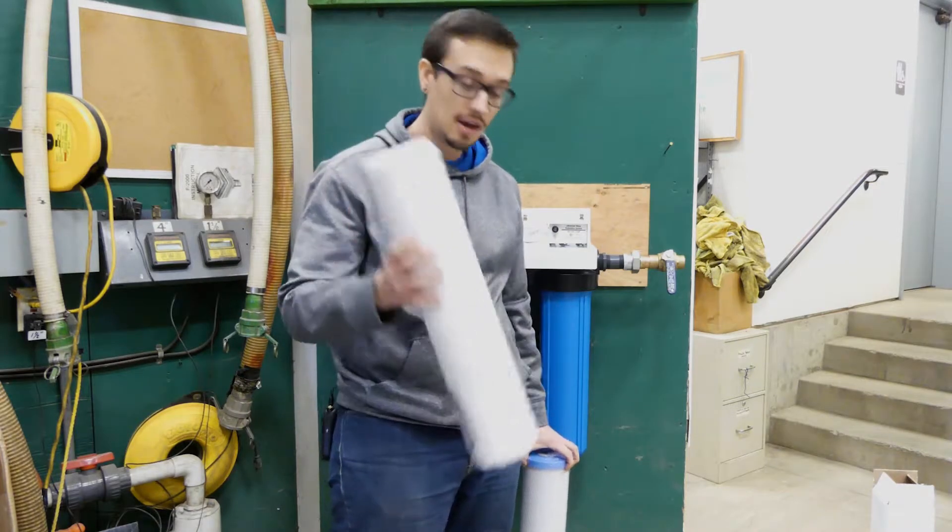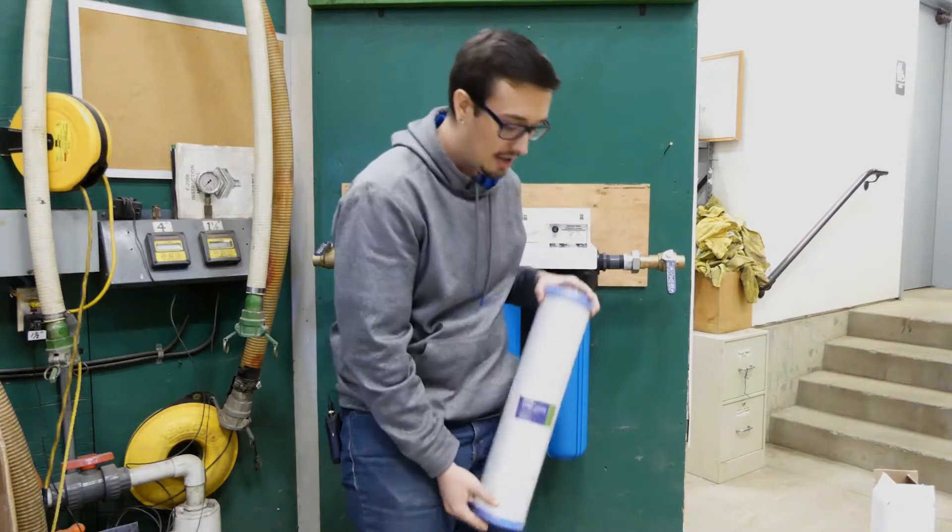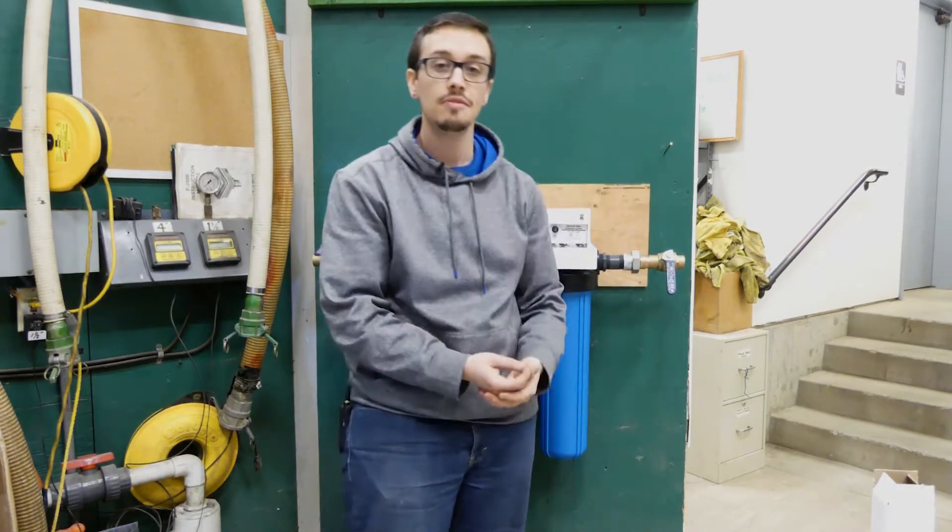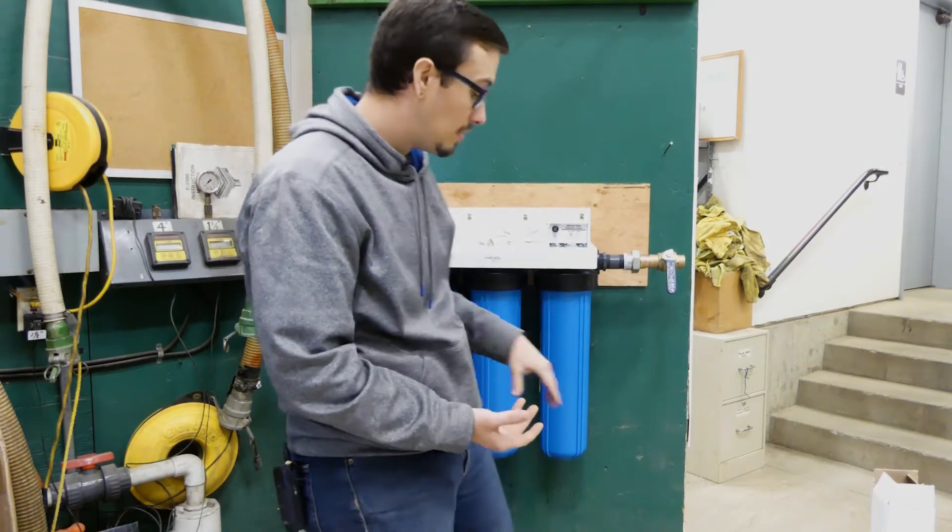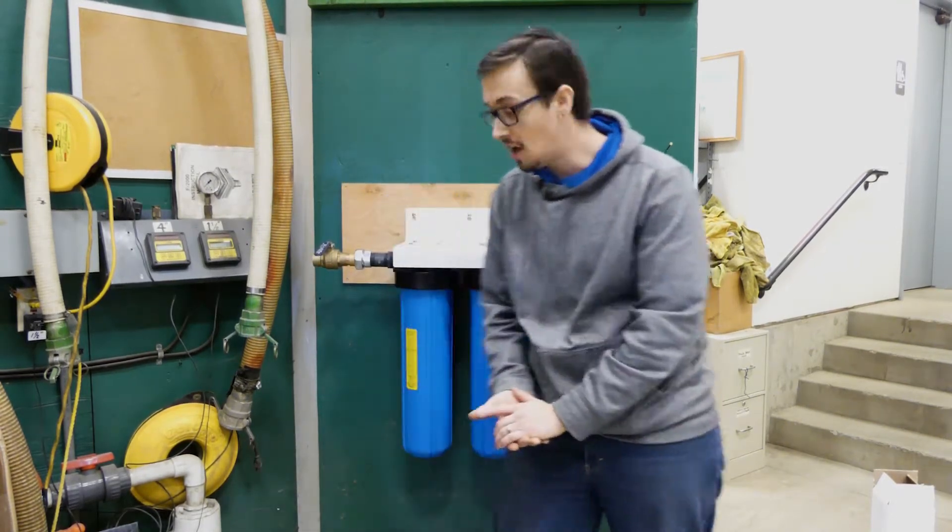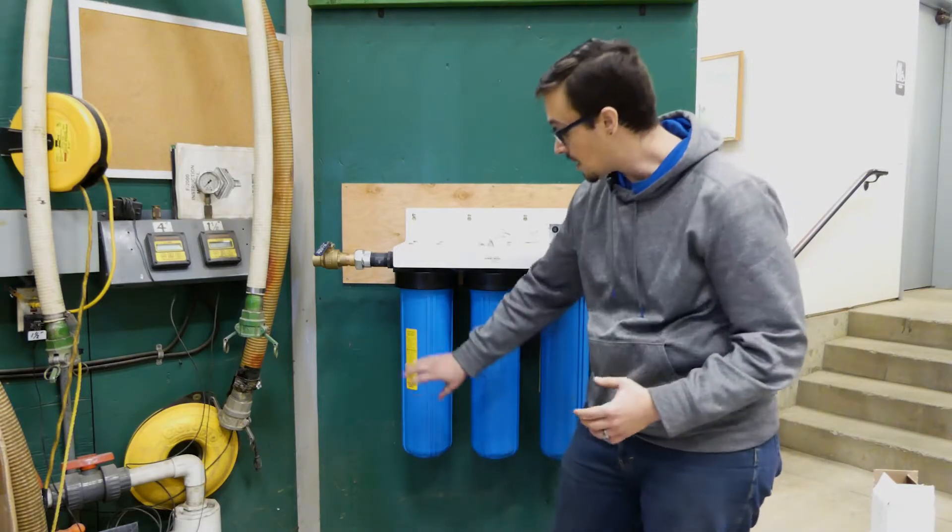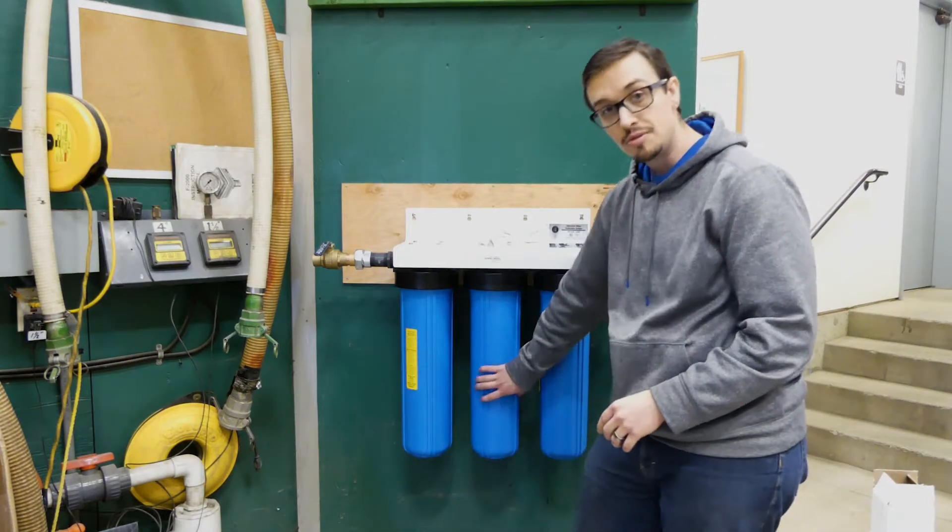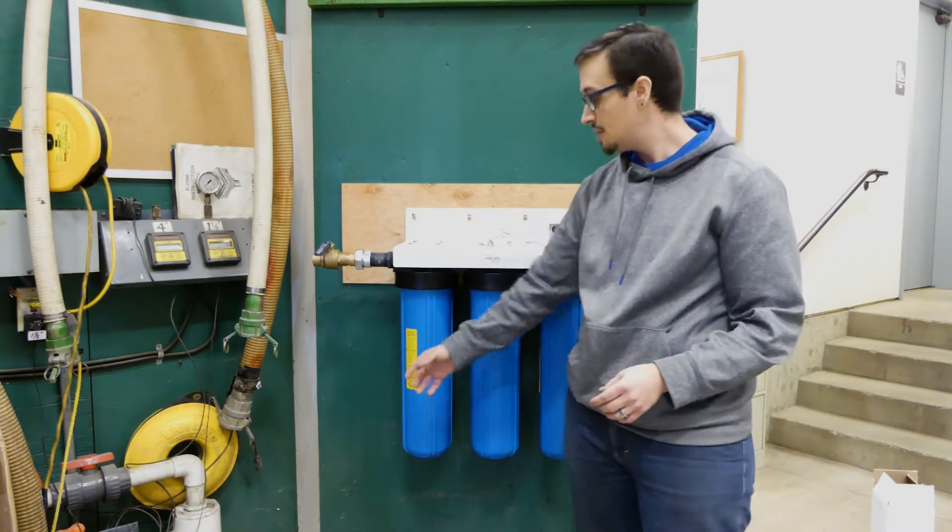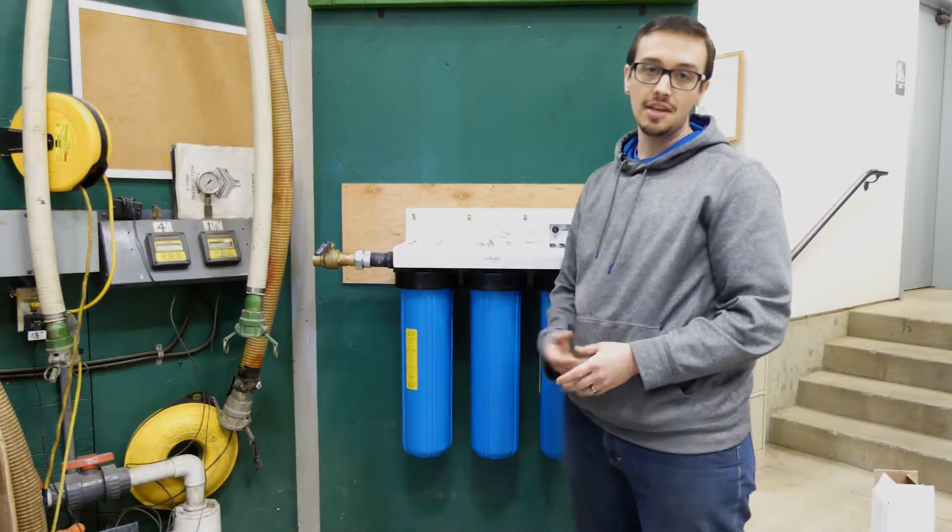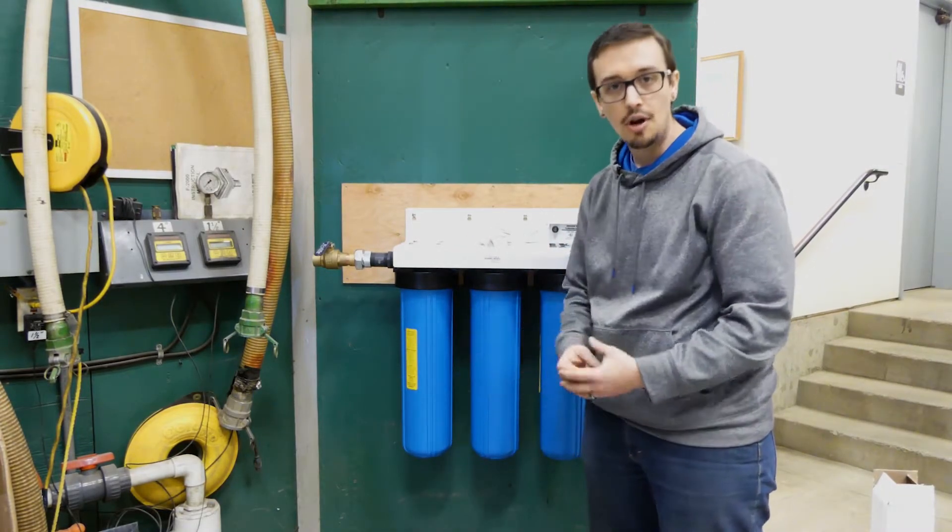What we've got here I've got a couple of filters. I've got a string filter, this is a polywound string filter, and then I've got a carbon block filter. These are two of the most common filters that you're going to find in a UV system. This system behind me we just got finished installing. It comes preset with one of each of those filters, a string filter and then a carbon filter.